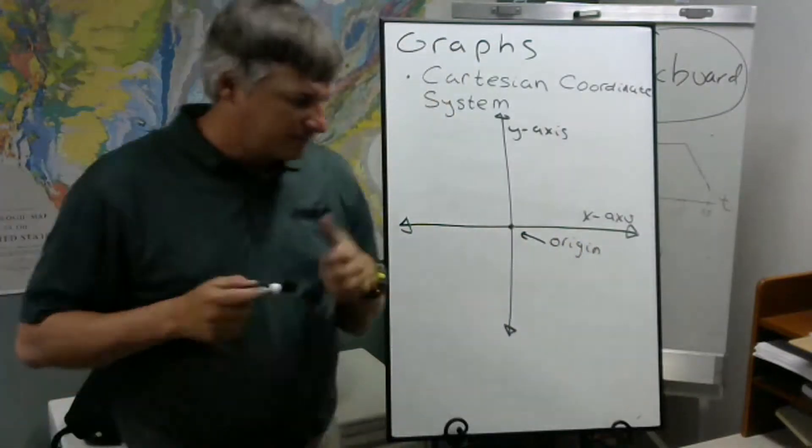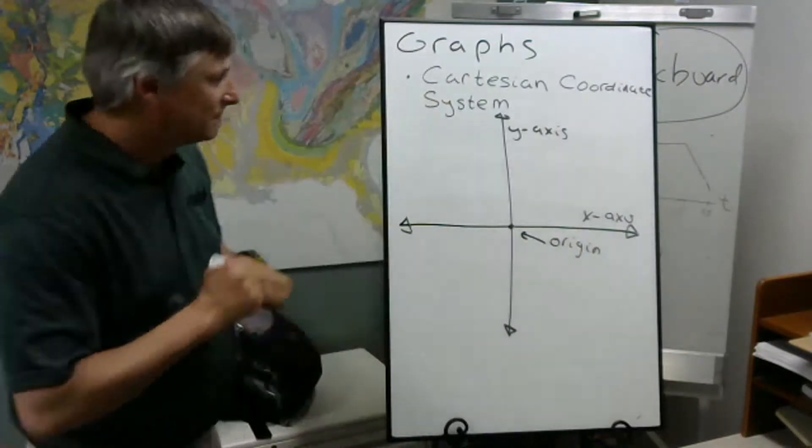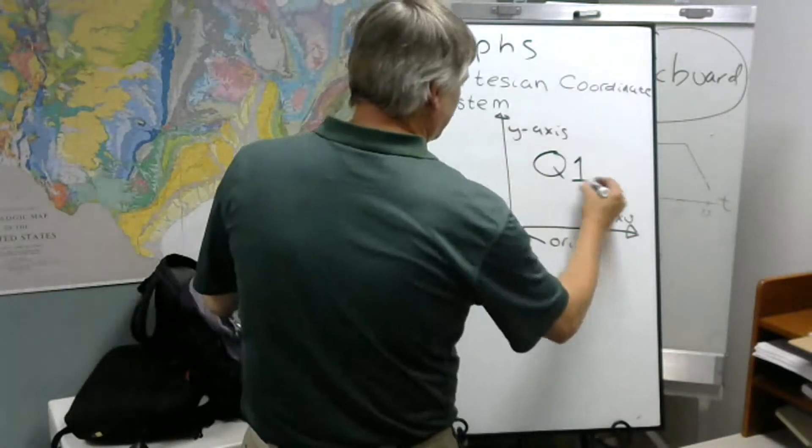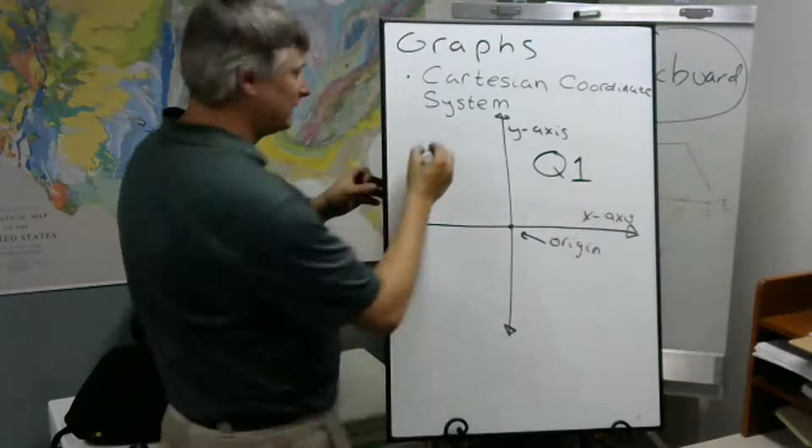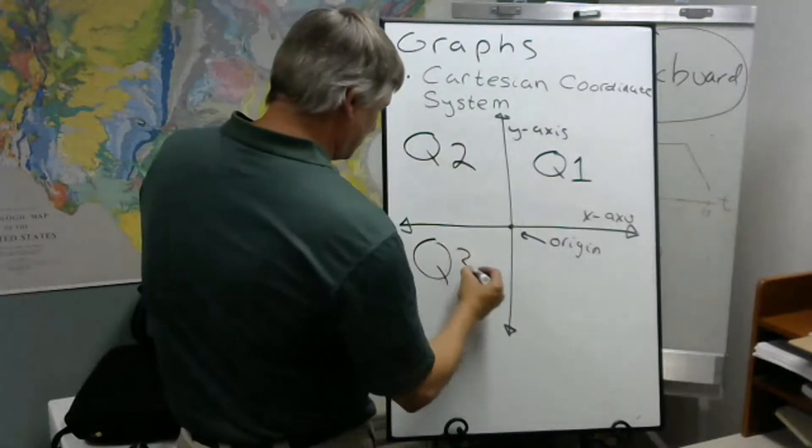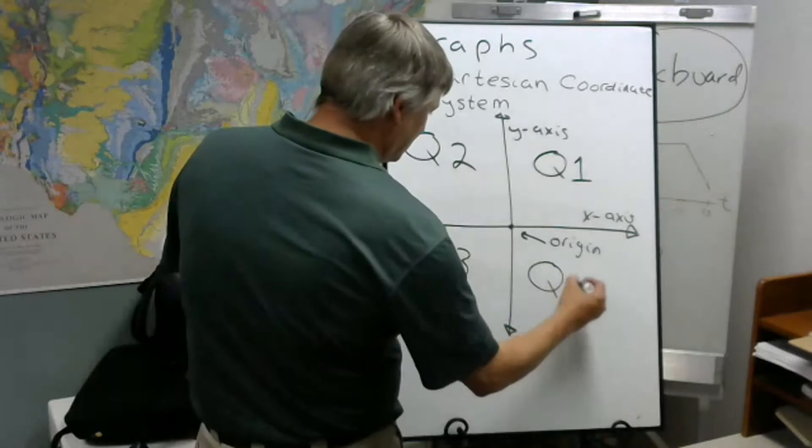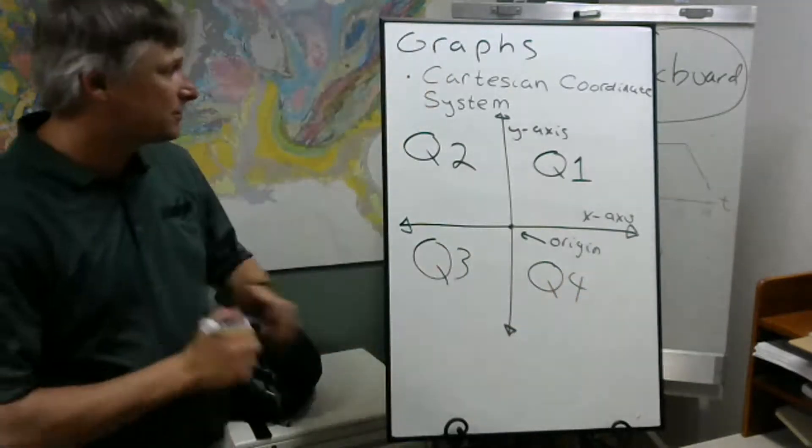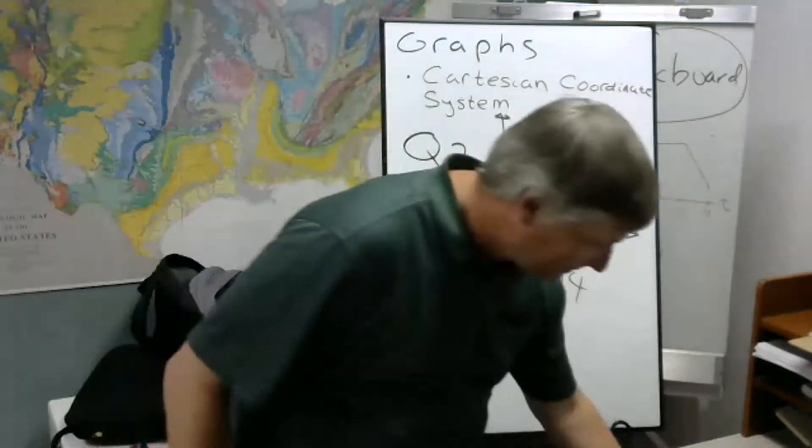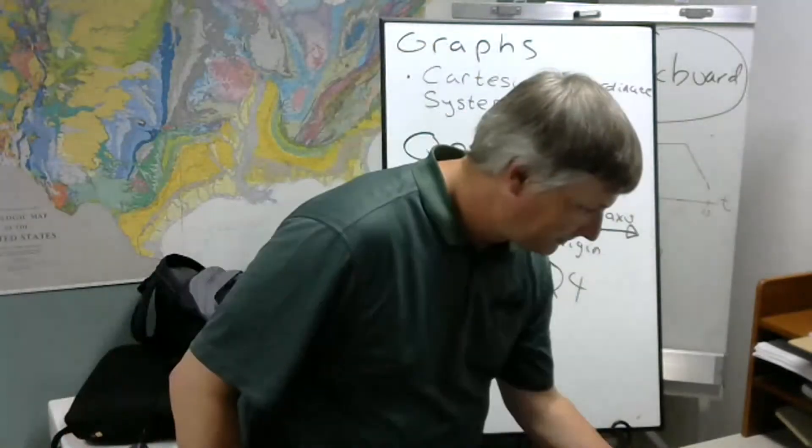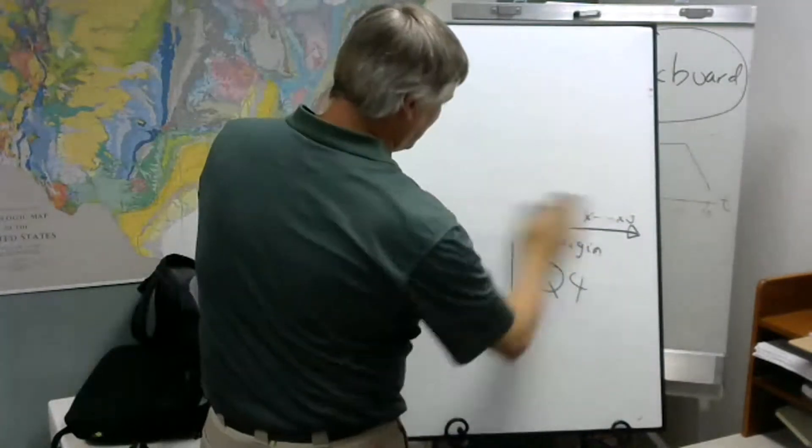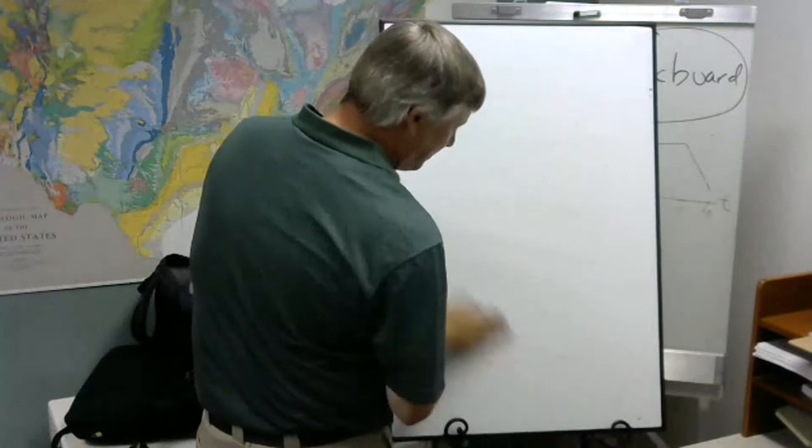Now, we also divide this into quadrants. We call this upper left one the first quadrant. This is the second quadrant. This is the third quadrant. And that's the fourth quadrant. Quadrants starting here go counterclockwise.